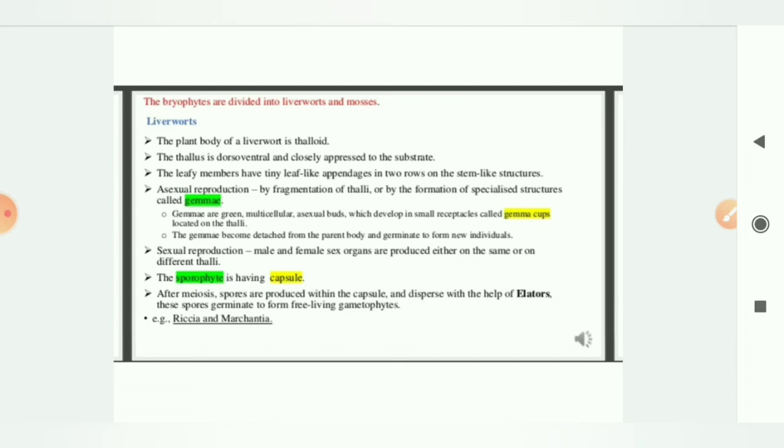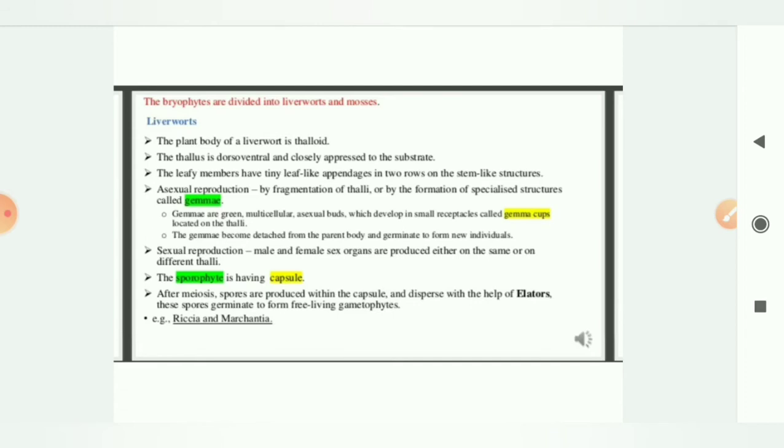The leafy members have tiny leaf-like appendages in two rows on the stem-like structure. They have leaf-like and they have stem-like structure. If I talk about asexual reproduction, it reproduces by fragmentation. What is fragmentation? One part of the parent will break down and it will grow into a new organism. And they form gemmae.